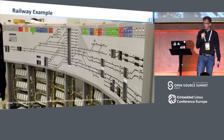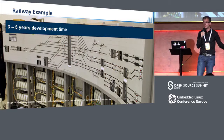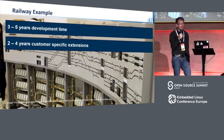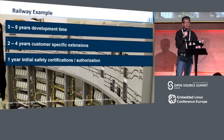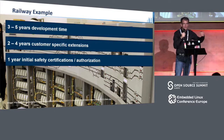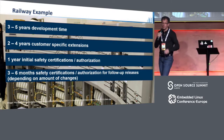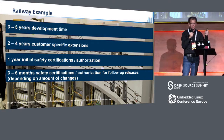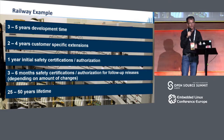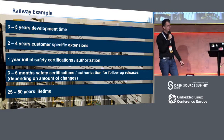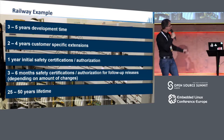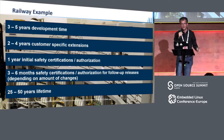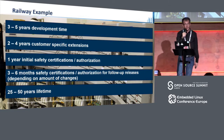If you look at the current product development cycles, it really takes a long time. We have three to five years development time, then two to four years of customer-specific and country-specific extensions, especially in the railway area. Then we have all the safety certifications and authorizations on top, and each and every change takes a lot of effort. Combined with the fact that these systems will run for a really long time — from 25 years up to 50 or 60 years in power plants — it's not an option to switch to the latest Linux kernel every year or every two years.